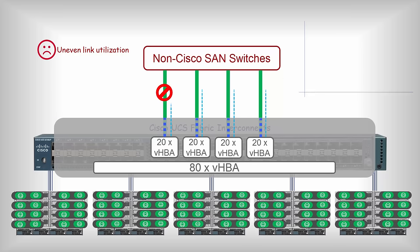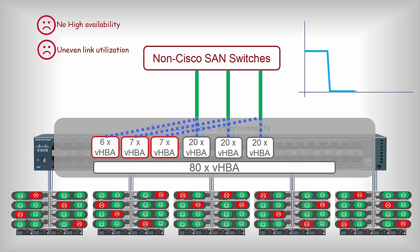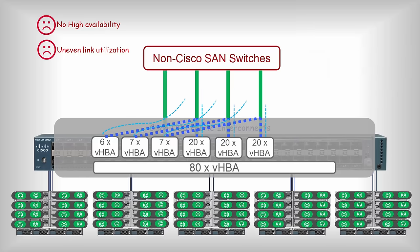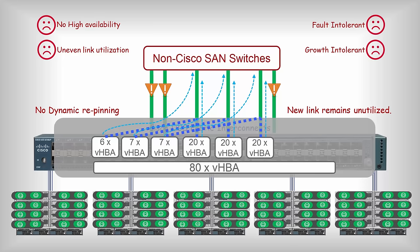Now what happens if one of the SAN uplinks fails? All the vHBAs pinned to that uplink will be logged out of the fabric and re-login using the remaining three uplinks. This would result in traffic drop for a couple of seconds for the 20 VMs that own the vHBAs pinned to the failed uplink. When the failed link comes up, all 80 vHBAs continue to be pinned to the existing three links only — the dynamic move to the new link does not happen. If you desire to increase the uplink bandwidth by adding more links, the traffic will not start using that link automatically. This is a clear waste of resources. You are prone to this kind of behavior with non-Cisco SAN switches.